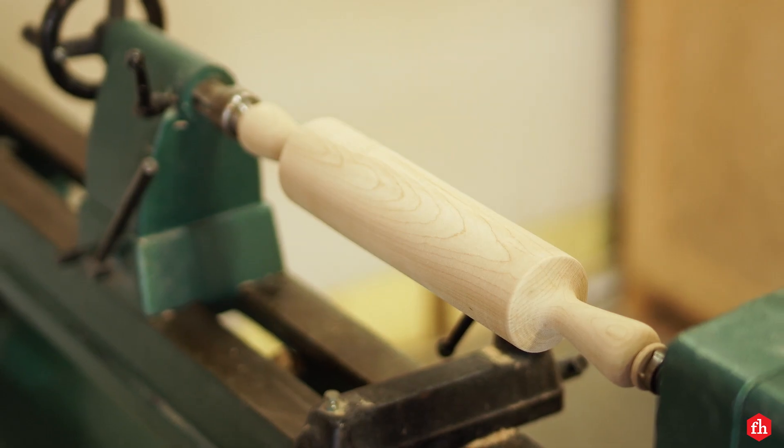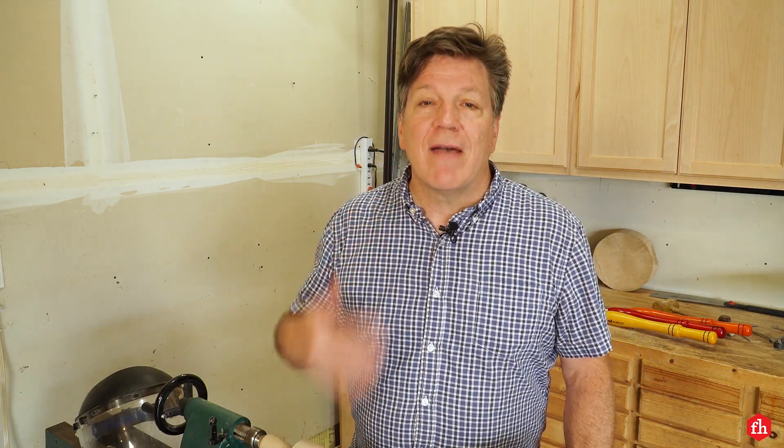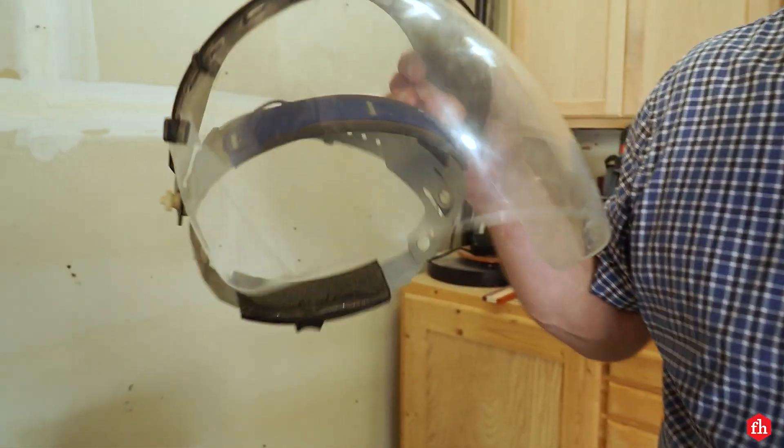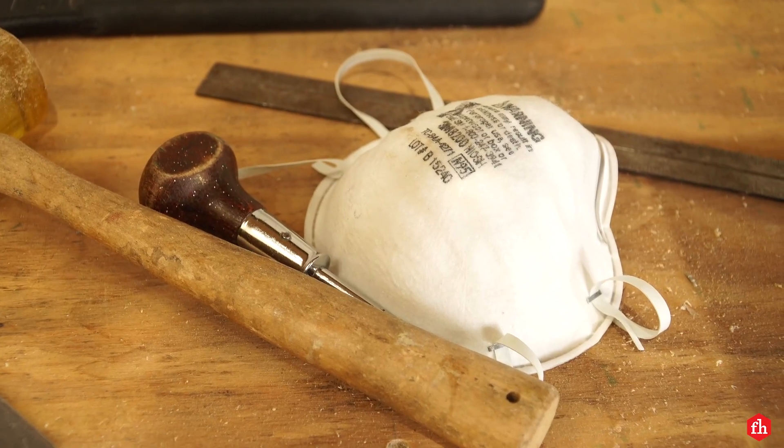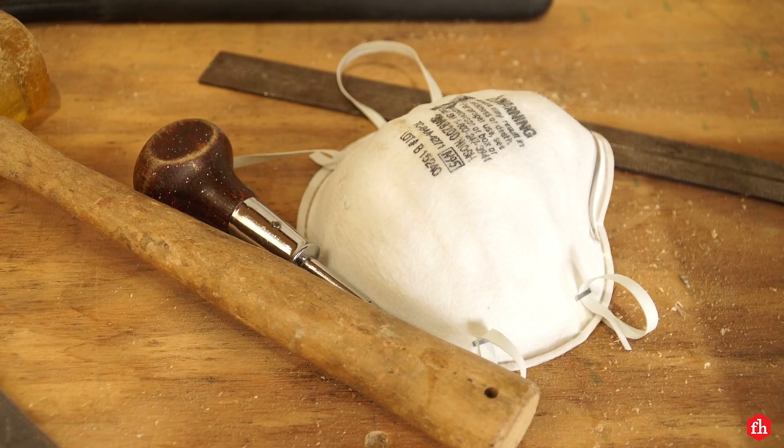Before we start making sawdust, let's talk a little bit about woodturning safety. First up, you never want to have anything dangling. Take off all your jewelry, tie back your hair, and roll up your sleeves. For spindle turning, you can wear just safety glasses, but for bowl turning, you always want to wear a face shield. And when you're sanding, protect your lungs with a dust mask.